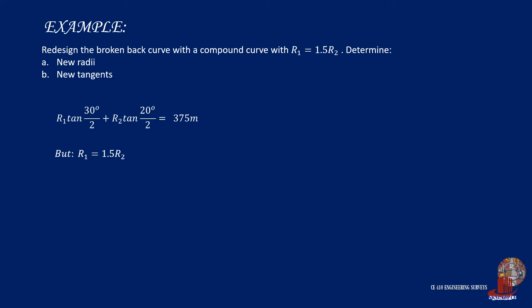So by substituting it to the general equation, we arrive at 1.5 times R2 times tangent of 15 degrees plus R2 times tangent of 10 degrees equals 375 meters.